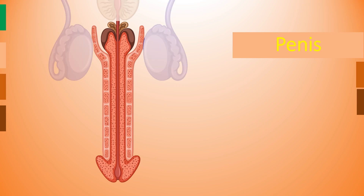Now let's look at the external parts. The penis is the main external organ which helps for sexual intercourse. It is the main copulatory organ of men, and it helps to deposit semen in the female genital tract.